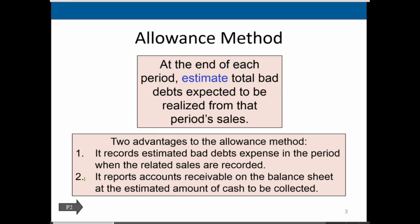The second advantage is that it reports accounts receivable on the balance sheet at the estimated amount of cash to be collected. We really should be recording accounts receivable net of what we know will be uncollectible. We know this because we've been in business a while and can estimate that some amount of debt will not be received. If we know a good percentage of receivables won't be collectible, we need to communicate that to readers through some kind of allowance account.